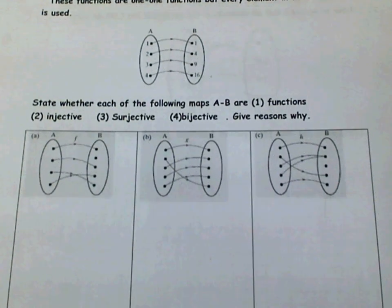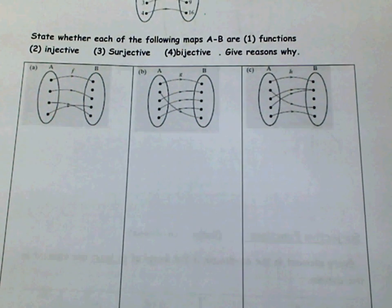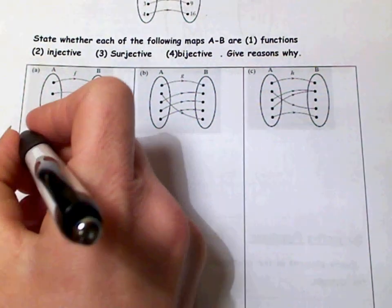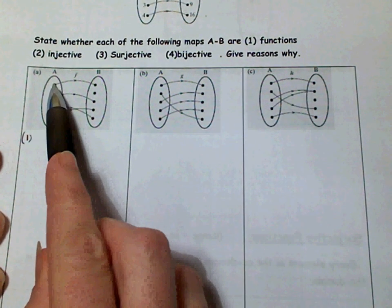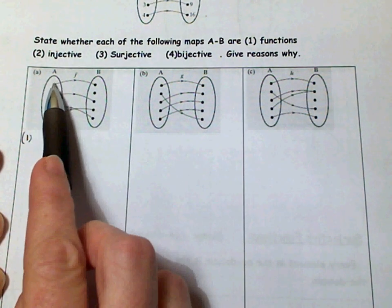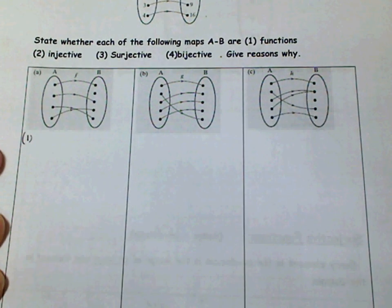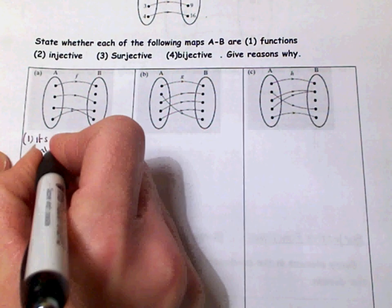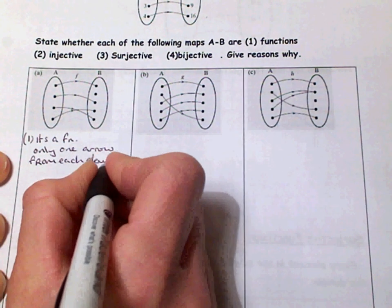Here is a very good example. State whether each of the following maps from A to B are: one, functions; two, injective functions; three, surjective functions; and four, bijective functions, giving a reason for each answer. Deal with each one separately. For graph number one, the first thing you're asked is: is it a function? Does every input have just one output? Is there only one arrow going from each element in A? Yes, there is — so it's a function. Only one arrow from each element in A.